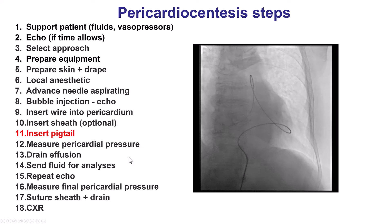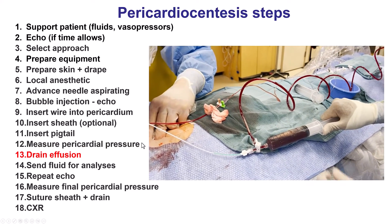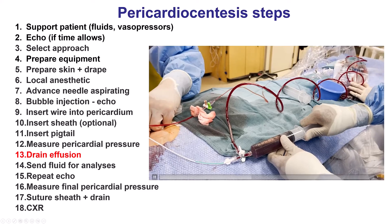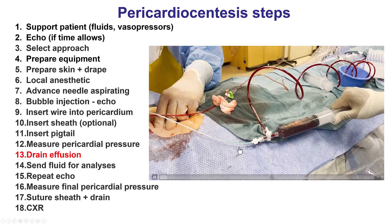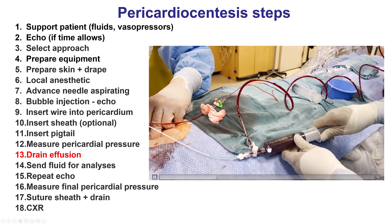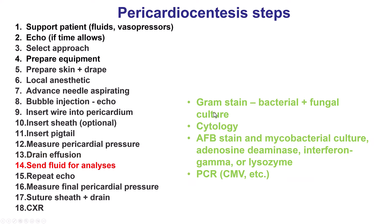Step 11 is to insert a pigtail catheter over the 0.035 guide wire into the pericardial space. Step 12 is to measure the pericardial pressure — more relevant for chronic pericardial effusions, with pressures in the 25–30 mmHg range seen in some cases. Step 13 is to drain the effusion: for perforations, blood is collected and given back via peripheral IV. For other effusions, fluid is sent for gram stain, cultures, cytology, mycobacteria analysis, and occasionally PCR for viruses.